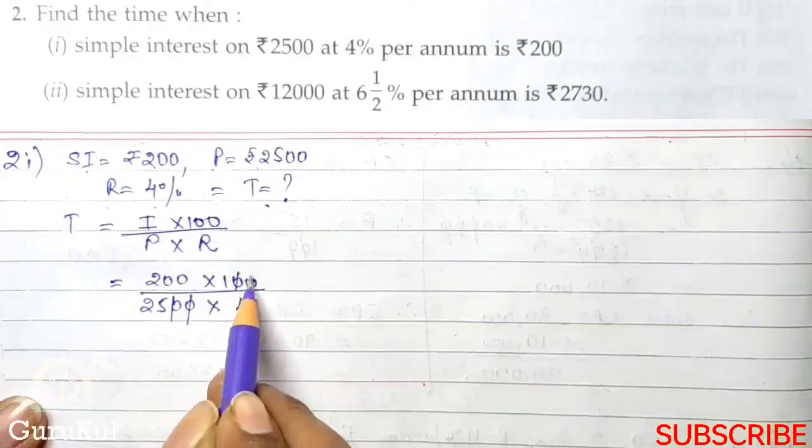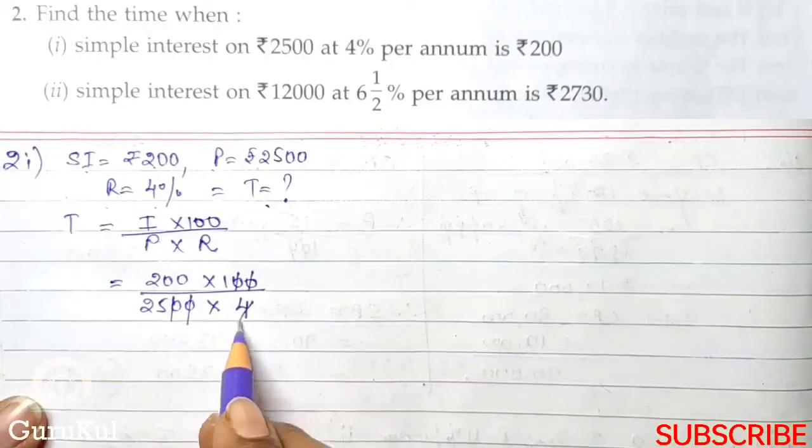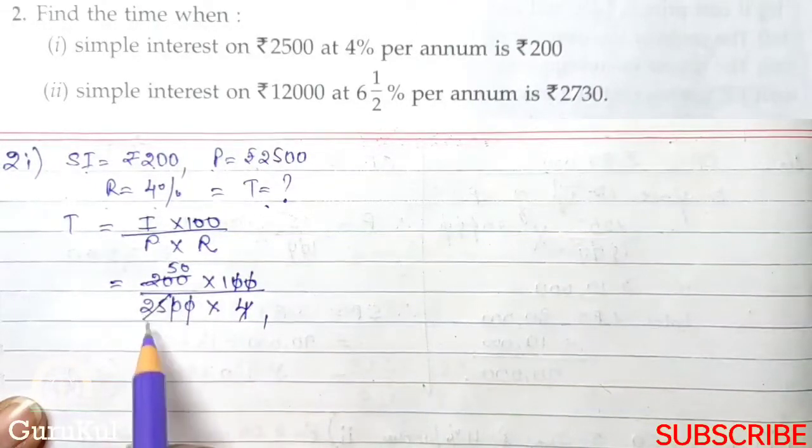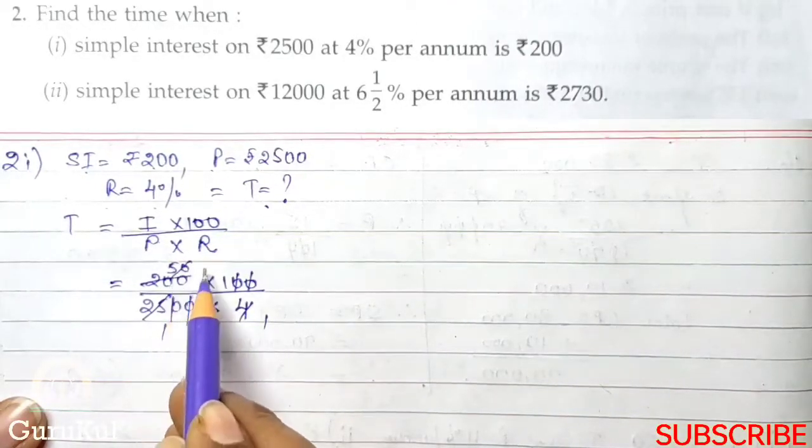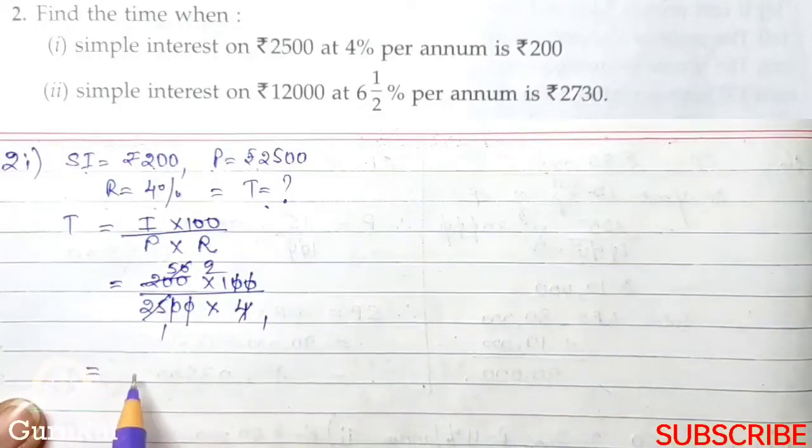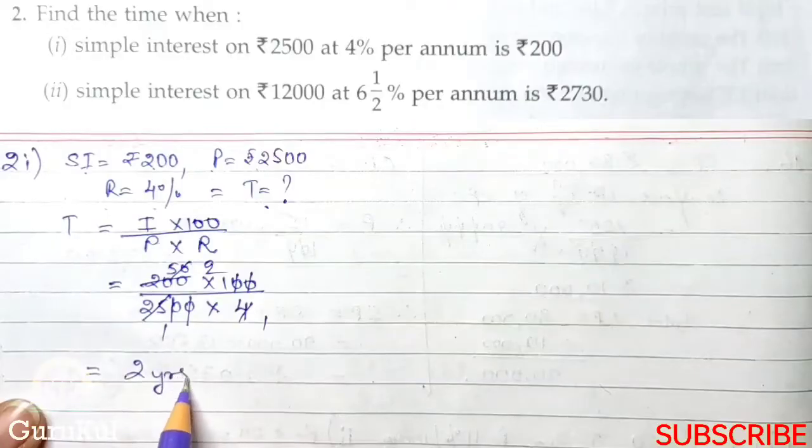Interest is 200 into 100 by principle is 2500 into rate is 4%. So, 00 got cancelled, 4, 1s are 4, 5, 0, 25, 1s are 25, 2s are 50. So our time comes out to be 2 years.